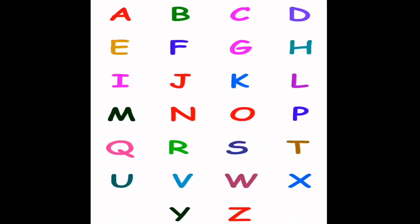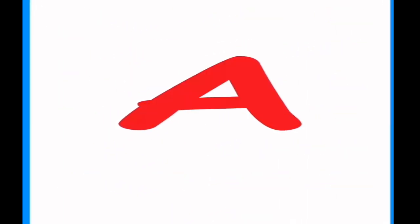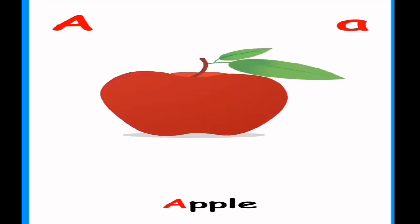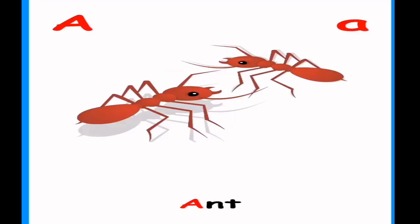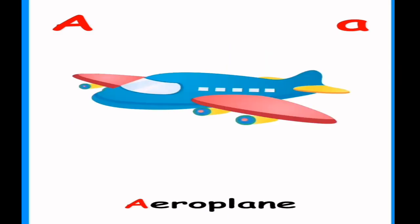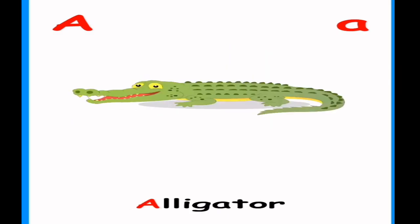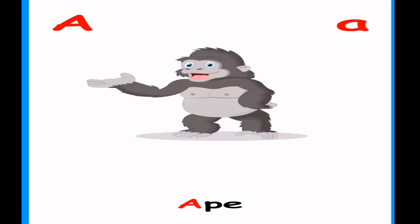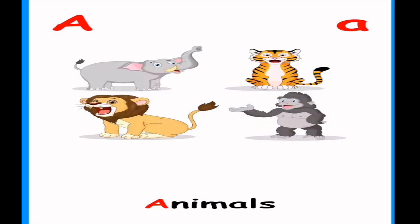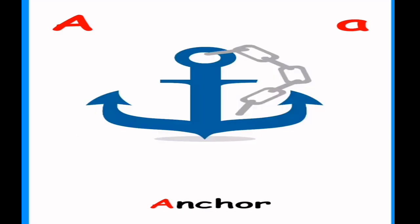Let's learn alphabets. A. Apple. Ant. Aeroplane. Alligator. Ape. Animals. Ambulance. Anchor. Axe. Astronaut.